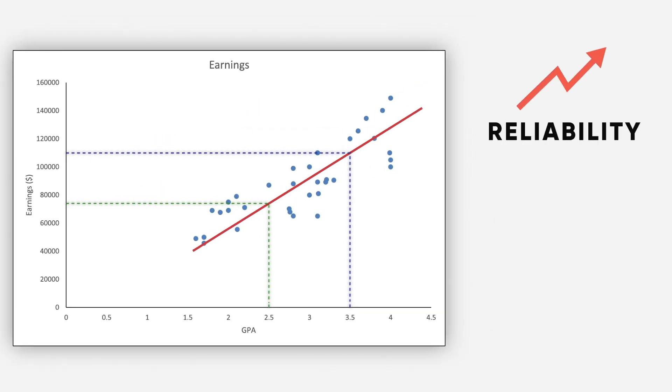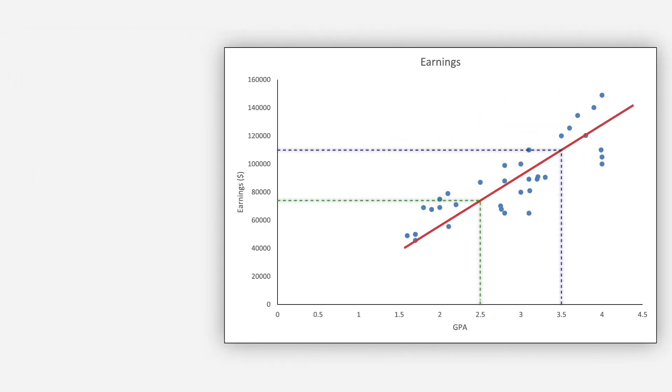However, to increase the reliability of regression model, you can add many independent variables. For example, in this graph, the model will have a formula like this, where x is the independent variable and y is the dependent variable.